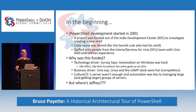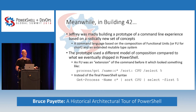There's one thing missing from that story — a certain gentleman, Jeffrey. He wasn't actually involved in the shell project at the time. However, he was over in Building 42, madly prototyping a new type of command line based on radically different concepts — a command line based on the composition of functional units, or FUs, for short, with an extended mutable type system. So you could describe a command line as being FU, FU, FU, and really get your anger out.